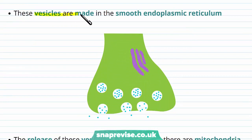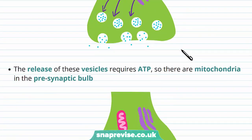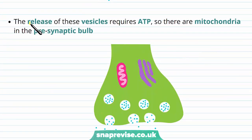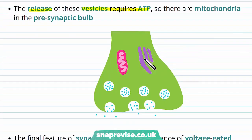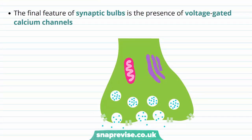The vesicles are membrane-bound and are made in the smooth endoplasmic reticulum, or SER — an organelle found in cells with multiple functions, one of which is to make membrane-bound vesicles. These vesicles travel down to the synaptic bulb ready to release neurotransmitters. Releasing the vesicles requires ATP, so the synaptic bulb also contains mitochondria, whose main function is to produce the ATP that drives the release of vesicles and the spread of neurotransmitters into the synaptic cleft.